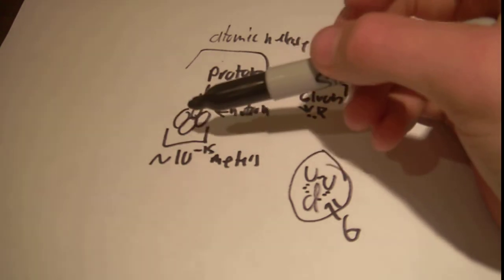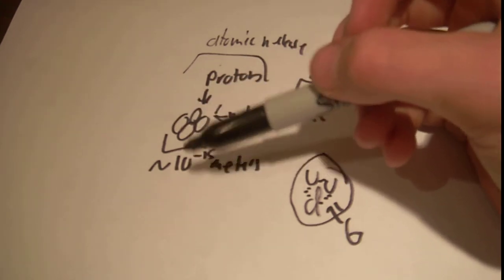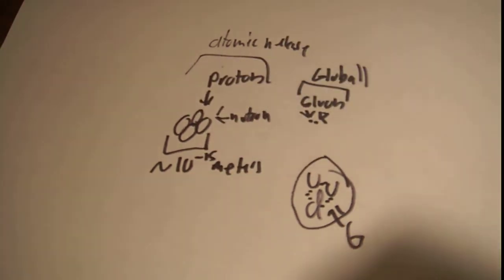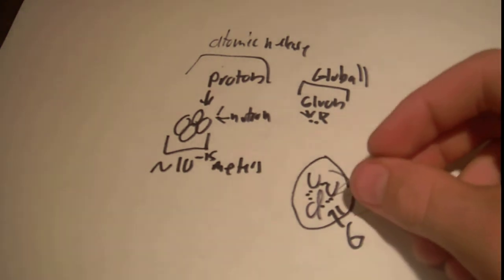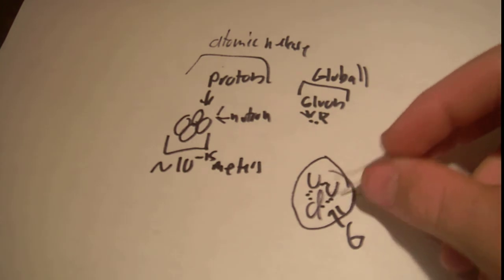But what holds these protons and neutrons together are mesons, specifically pions here. But mesons also can be bosons, composite bosons as they're known, meaning boson, the gluon is like its own particle. It's an elementary particle.